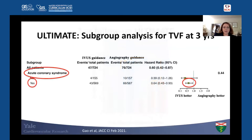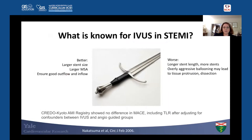The ULTIMATE trial in all-comers showed IVUS reduced target vessel failure at 3 years from 10.7% in the angiography-guided group to 6.6% in the IVUS-guided group, with benefits preserved at 1-, 2-, and 3-year follow-up. The angiography-guided group showed progressively higher rates of target vessel failure with each year, while the IVUS-guided group showed consistently lower rates. In subgroup analysis for target vessel failure at 3 years, ACS patients had lower rates of TVF in the IVUS-guided group compared to the angiography-guided group.